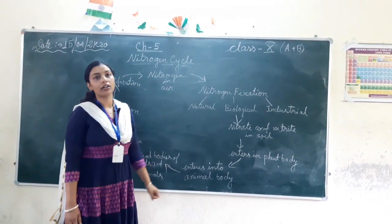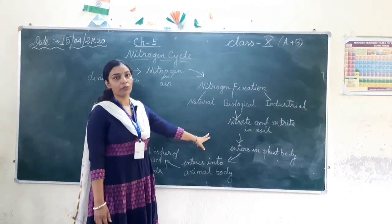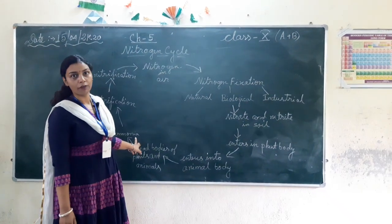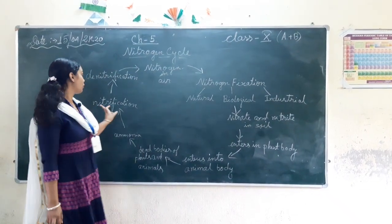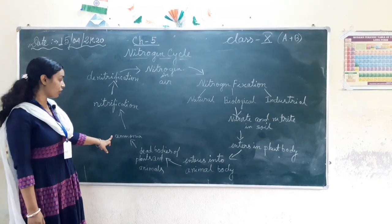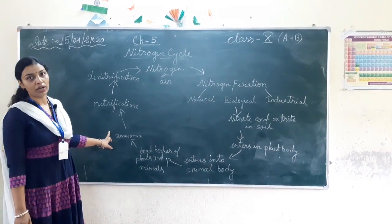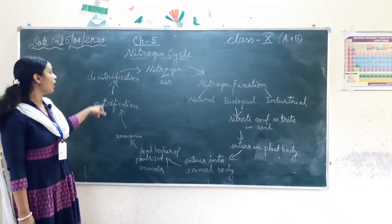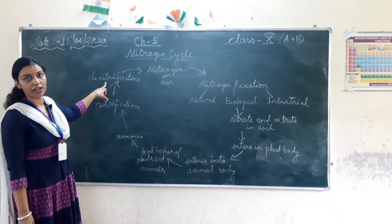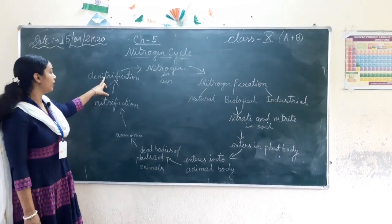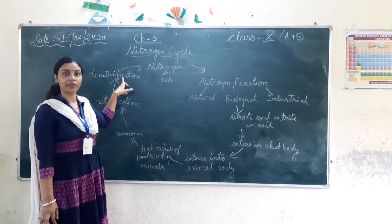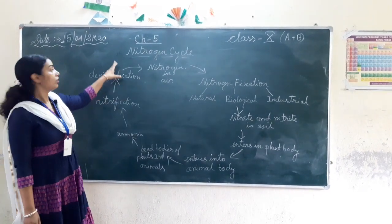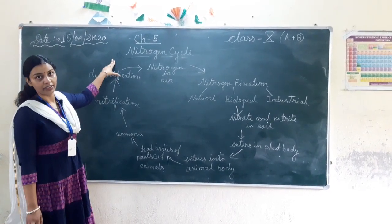After that, the dead bodies of plants or animals are converted into ammonia through the process of ammonification. Then comes nitrification, where ammonia is converted into nitrate or nitrite. Then after denitrification, when the soil reduces its nitrogen, the soil becomes less fertile and the nitrogen in the soil goes back into the air.